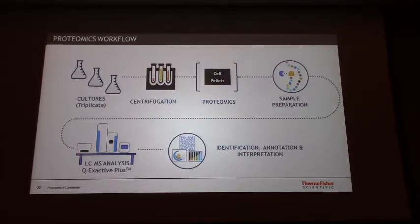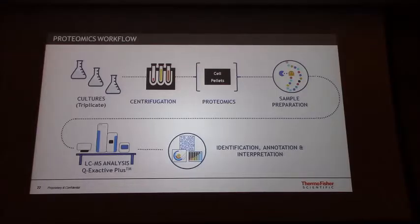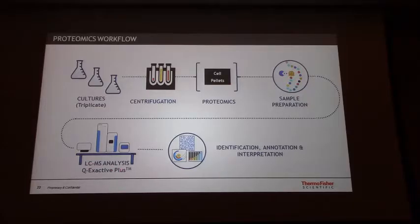The proteomics workflow was similar to what we described before. We did cell cultures for these five strains in triplicates, centrifuged and took the pellets. Then we did sample preparation using the Pierce sample preparation kit for mammalian cells, but changed the lysis buffer because yeast cells don't break down the same way, so we used a Josh Coon protocol. We used the Q Exactive Plus LC-MS platform with the EasyNLC-200, and used Proteome Discoverer for data processing.